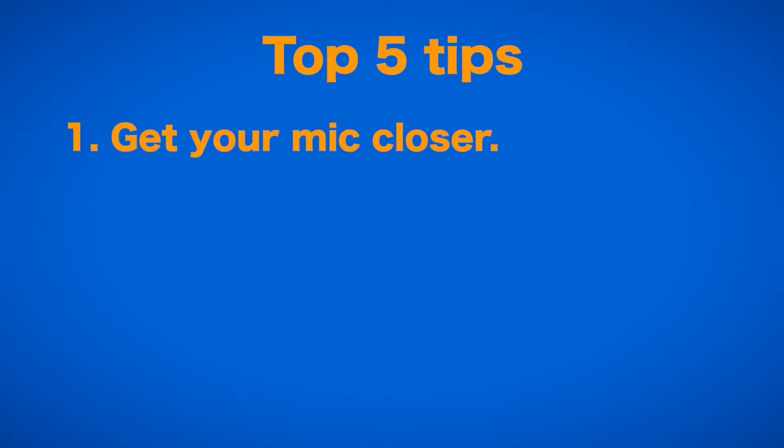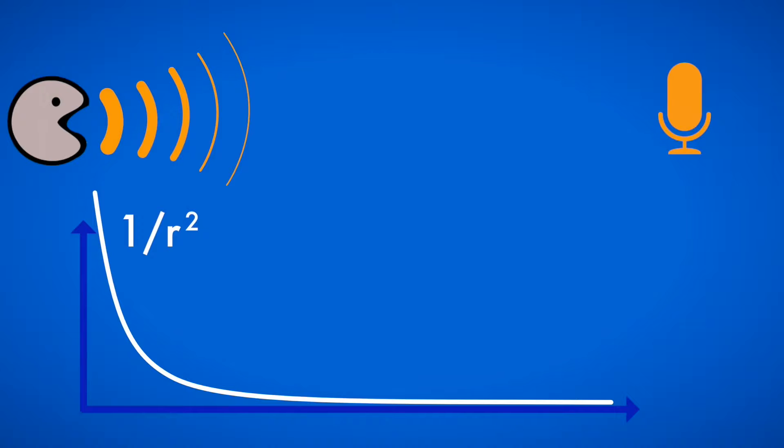The first tip is, get your mic closer. Just like light, a traveling sound wave follows a 1 over r squared law. That means that if you have your mic 3 feet away from your subject instead of just 1, only 1/9th of the signal strength will reach your microphone. This is way more important than the quality of the microphone you actually use, as can be seen or rather heard in this exaggerated example.